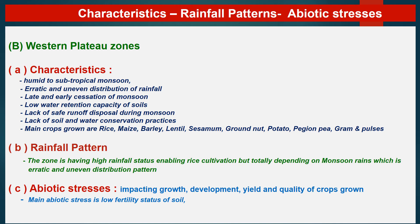The Western Plateau zone has high rainfall which enables rice cultivation but is totally dependent on monsoon rains with erratic and uneven distribution patterns. The main abiotic stress in this zone is the low fertility status of soil.